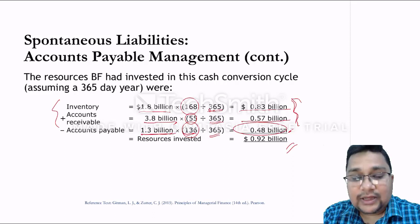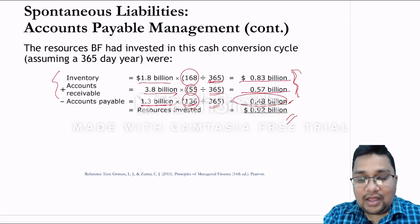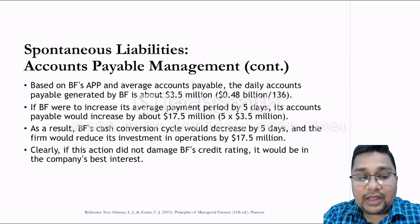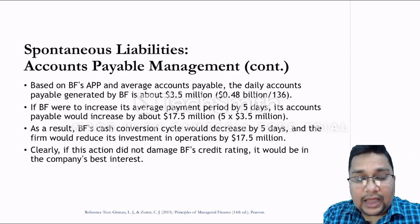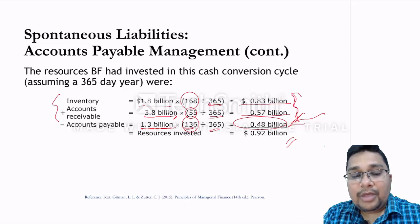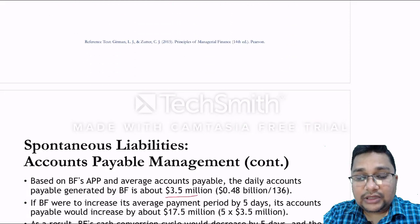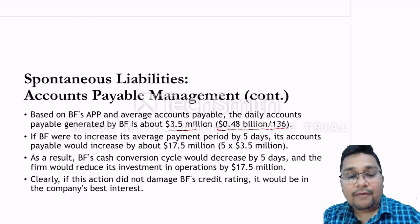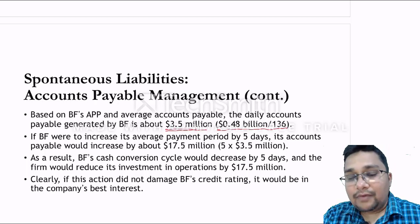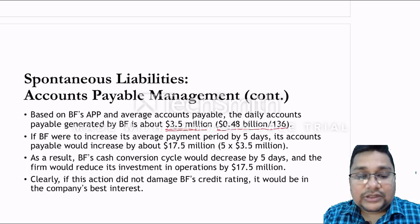Deducting 0.48 billion from the sum of the inventory and receivables amounts gives 0.92 billion dollars — the total resources invested in the cash conversion cycle. Based on the average payment period of 136 days, the daily accounts payable generated by the company is about 3.5 million dollars per day, since 0.48 billion divided by 136 days equals approximately 3.5 million.